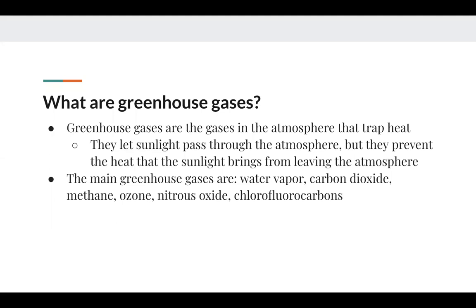Greenhouse gases are the gases in the atmosphere that trap heat. They let sunlight pass through the atmosphere, but they prevent the heat that the sunlight brings from leaving the atmosphere. The main greenhouse gases we're going to talk about in this lesson are water vapor, carbon dioxide, methane, ozone, nitrous oxide, and chlorofluorocarbons.